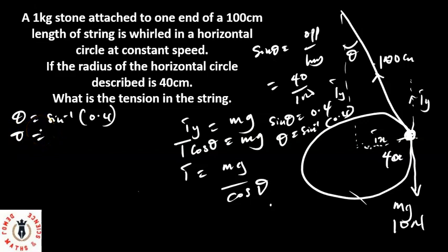So that θ now is equal to sine inverse of 0.4. From my calculator, it's the same thing as 23.57 degrees. So the tension in the string is equal to mg, which is equal to 10 newtons, over cos θ.